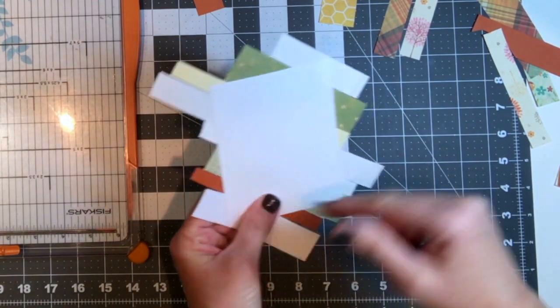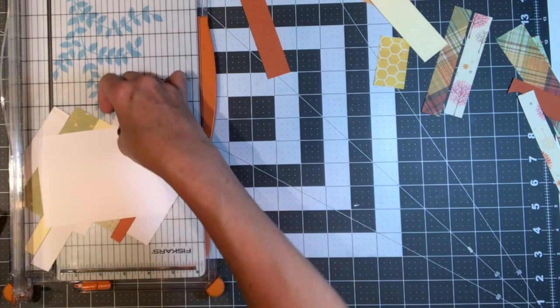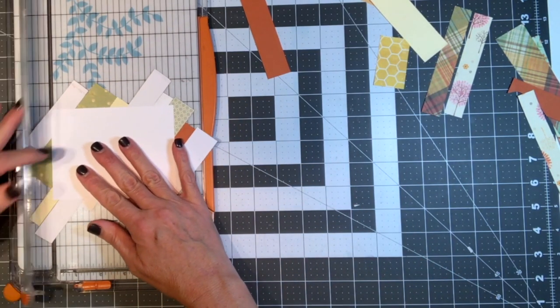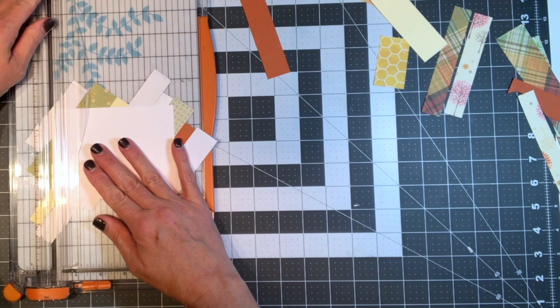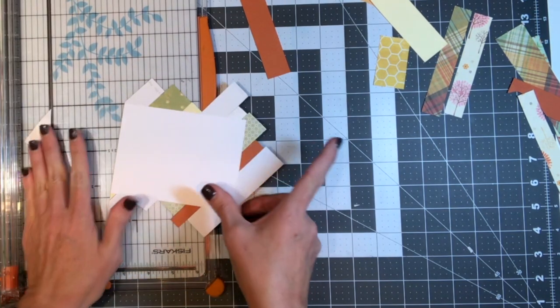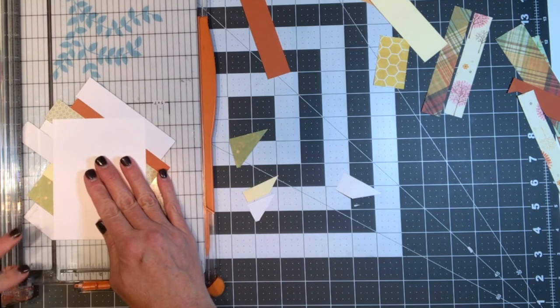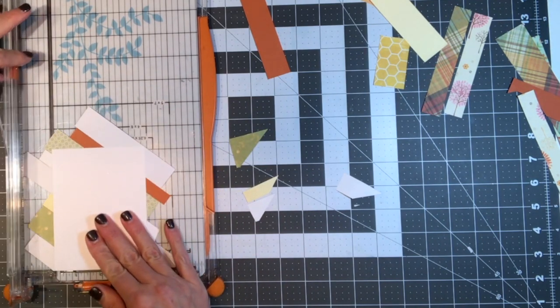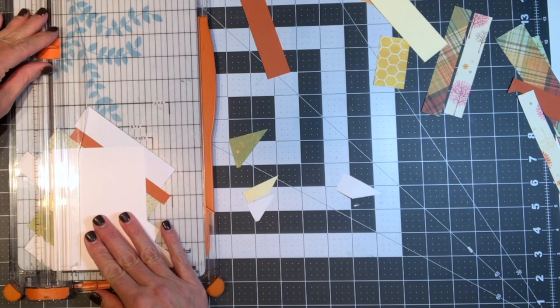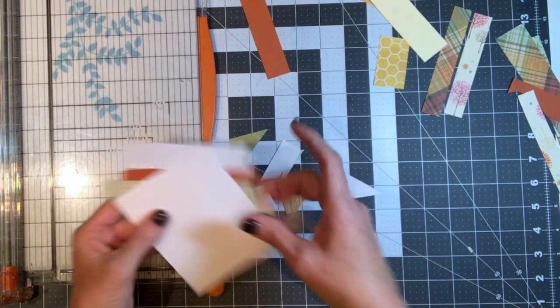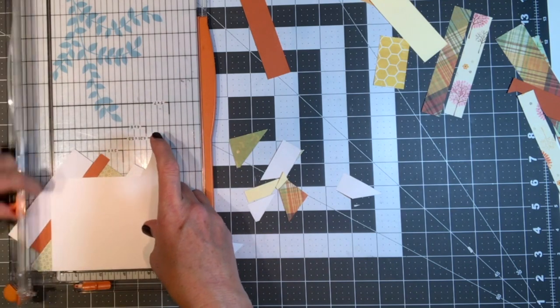So now I'm just going to trim around the outer edge by flipping over this card base so that I can see the card and just trim around the edges. My trimmer, my paper trimmer, has a little wire guide so it makes this job really easy and helps me to find the edge of my card so I can easily trim around the side. And so you just trim all these little pieces off.